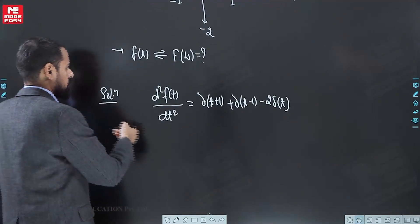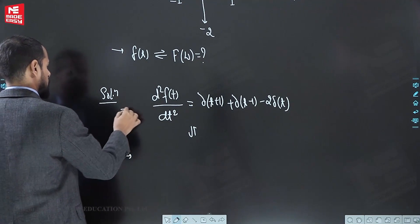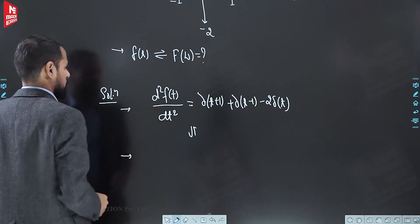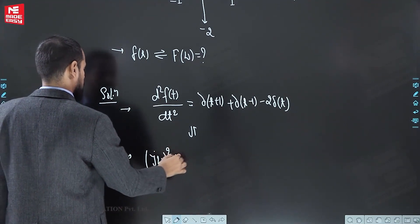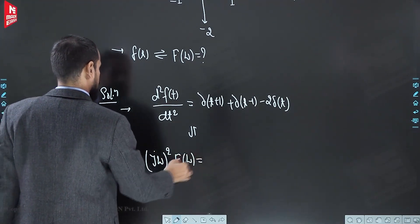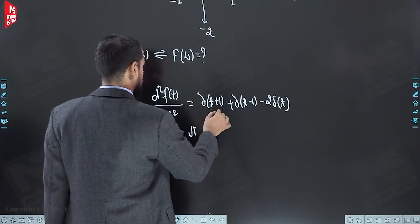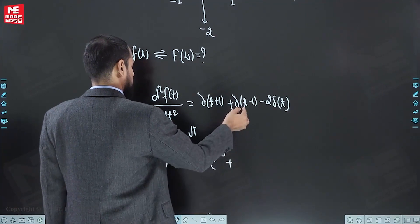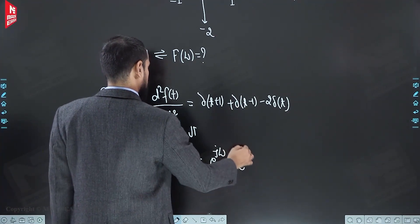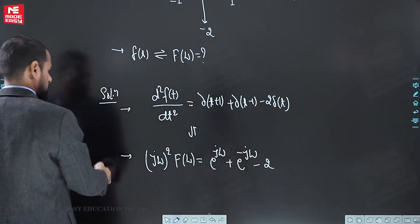Now we will apply the Fourier transform on this relationship. If you differentiate two times, you multiply (jω)² with F(ω) — this is the differentiation-in-time property. By the time-shifting property, for δ(t+1) the Fourier transform is e^(jω), for δ(t−1) it is e^(−jω), and for 2δ(t) the Fourier transform is 2.